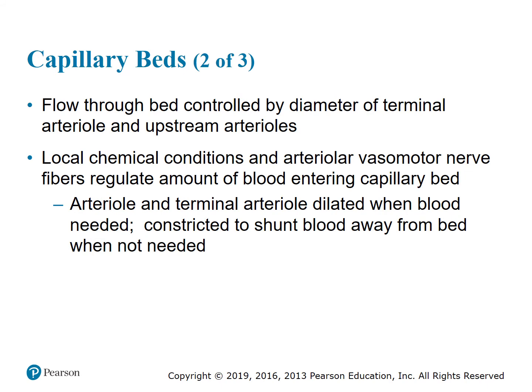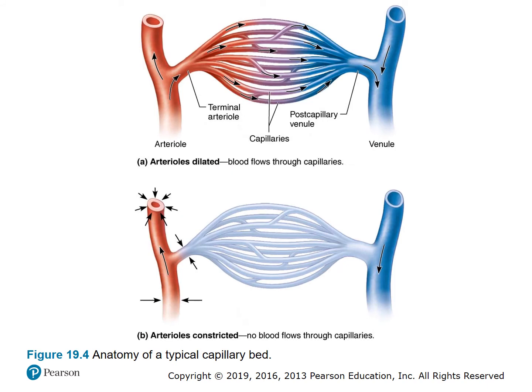Flow through the bed is controlled by the diameter of the terminal arteriole and upstream arterioles. Local chemical conditions and arteriolar vasomotor nerve fibers regulate the amount of blood entering the capillary bed. Arterioles and terminal arterioles dilate when blood is needed and constrict to shunt blood away when it's not. Figure 19.4 shows that when arterioles dilate, blood flows through the capillaries, whereas when arterioles constrict, there is no blood flow through the capillaries.